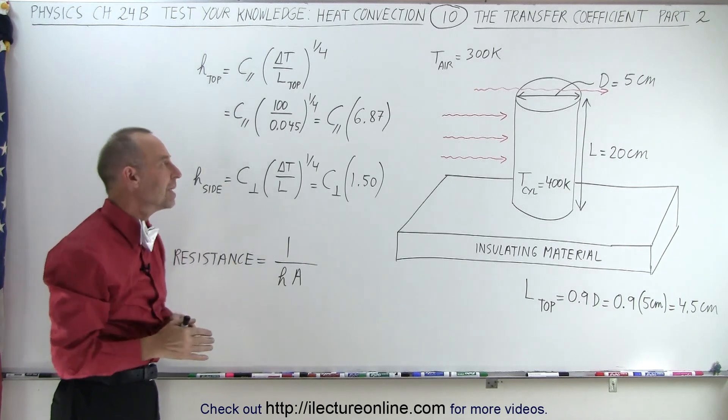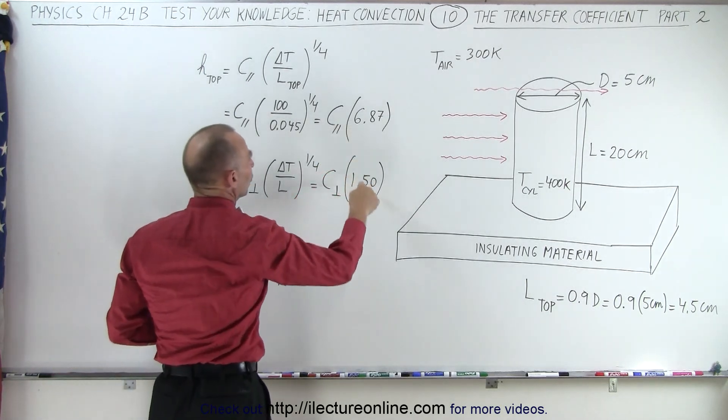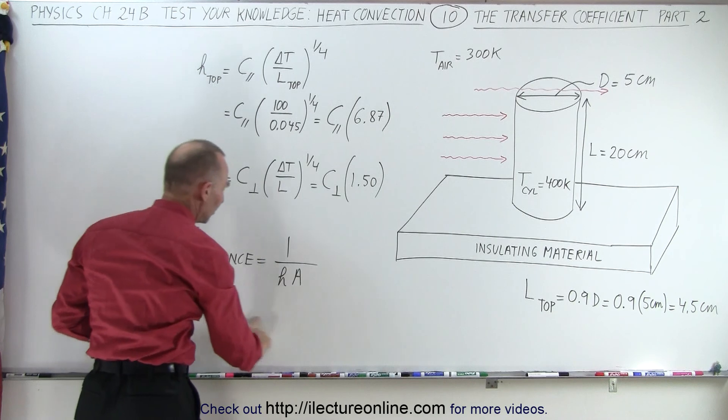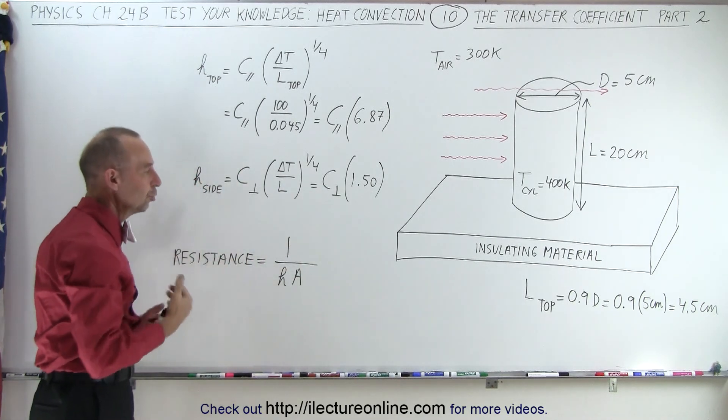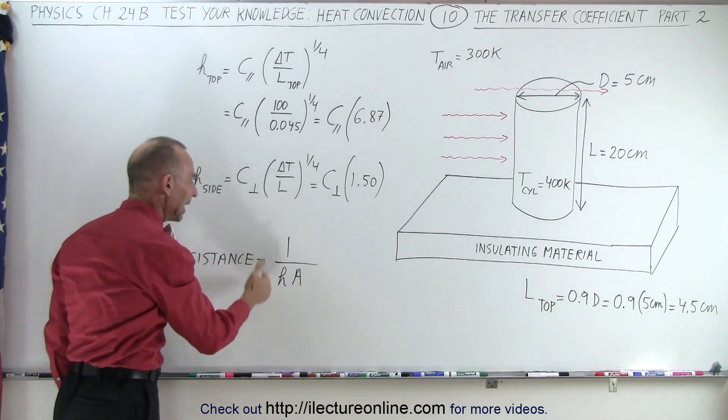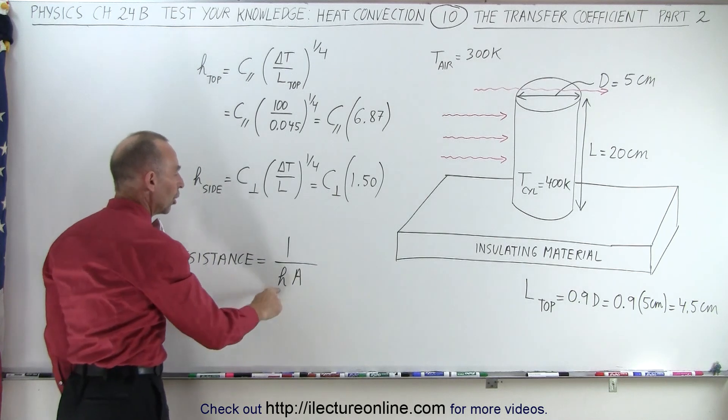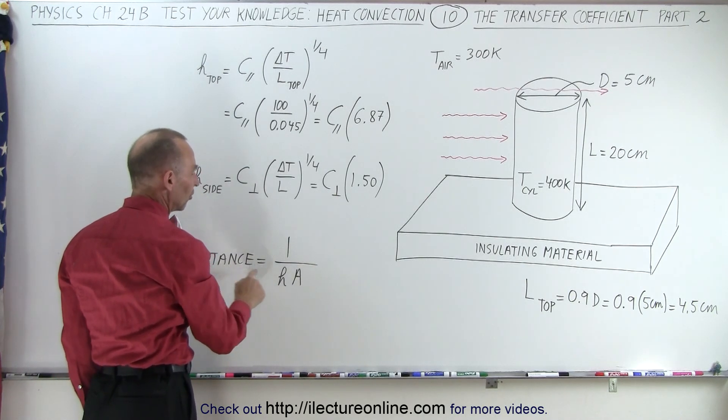Now, what does that mean when this is larger and this is smaller? Remember the concept of the resistance to the heat flow, which is 1 over H times A. A larger H means a smaller resistance.